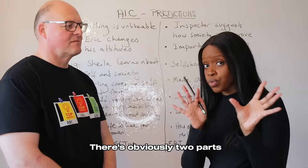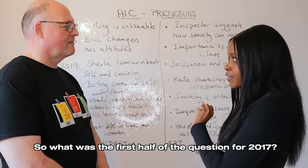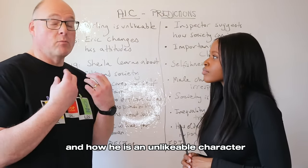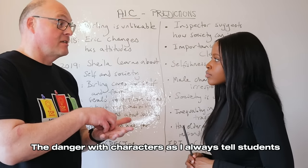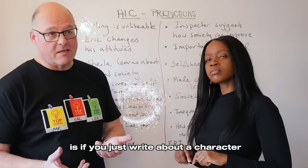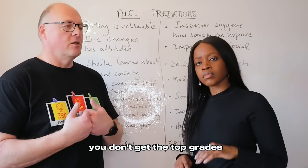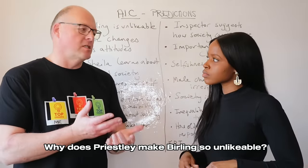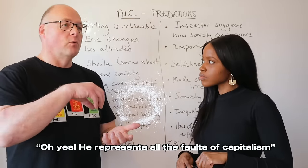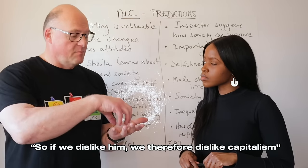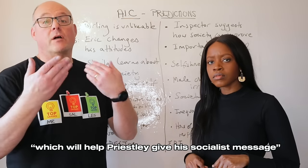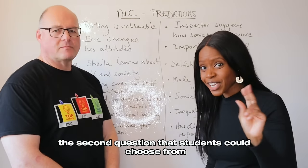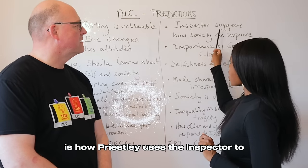So looking back through the years since this current syllabus started: in 2017 the first half of the question was about Birling and how he is an unlikable character. The danger with character questions, as I always tell students, is if you just write about the character you don't get the top grades — you have to write about them as constructs. So here you'd be thinking: why does Priestley make Birling so unlikable? He represents all the faults of capitalism, so if we dislike him we therefore dislike capitalism, which helps Priestley give his socialist message.